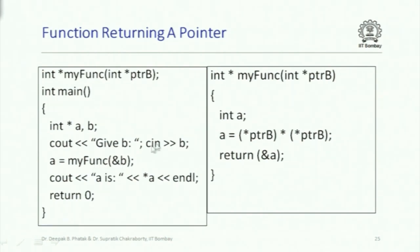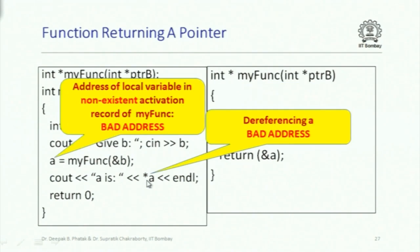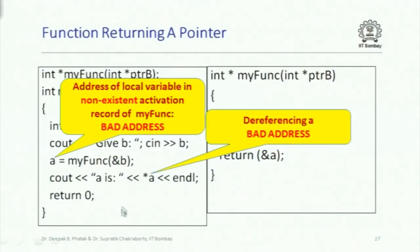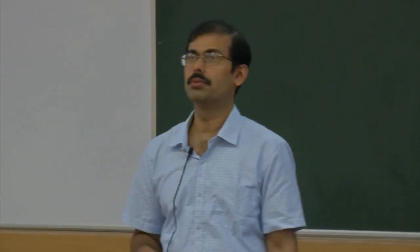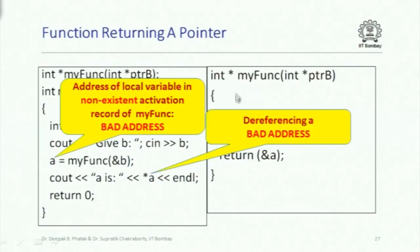When you try to dereference that address as star a - my_func was called and it returned the address of its local variable - you will have a problem because you are dereferencing a bad address. Those locations had meaning when the function was active, but when the function returns, the entire activation record has been freed. Those locations do not necessarily have the same meaning. So if you write star a, it will print something but it could be garbage.